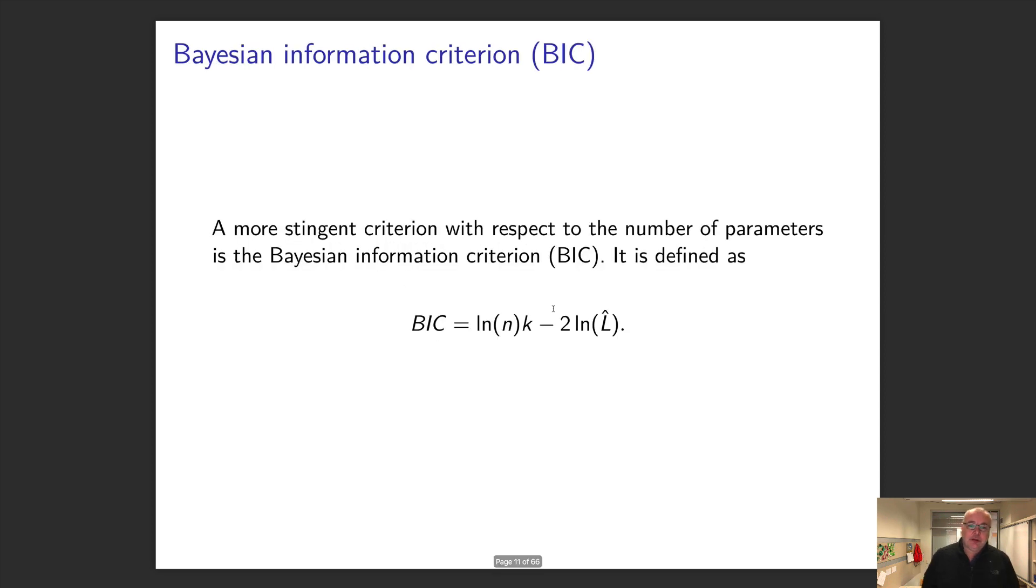Finally, there's another one which is even more stringent - it always returns smaller models - which is called the BIC. And what this has now is again you have your likelihood term here, but now you've also got k (your number of parameters) plus an extra term that takes into account how much data you've got. This is the log of n. And generally the Bayesian Information Criterion will always prefer smaller models. So there you are - there are three heuristics you could use in your algorithms. Okay, see you next time!